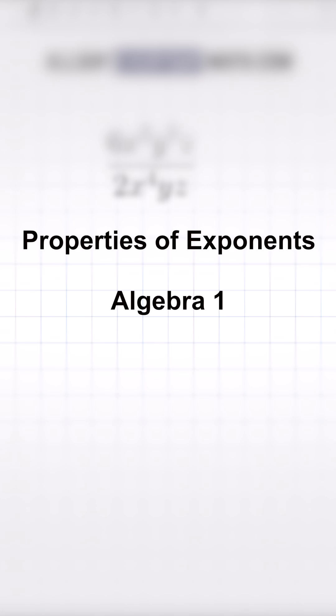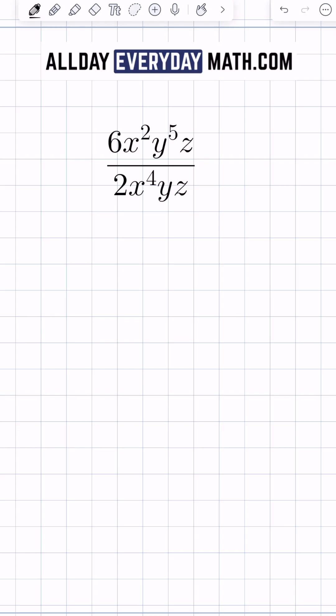This is how you simplify an expression using the properties of exponents. We have 6x squared y to the fifth z all over 2x to the fourth yz.